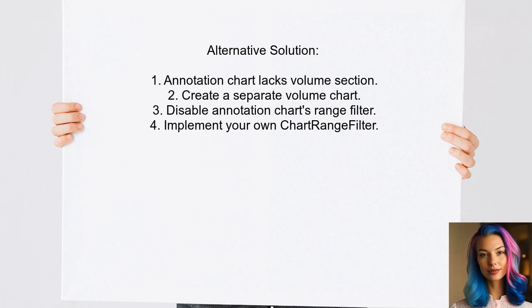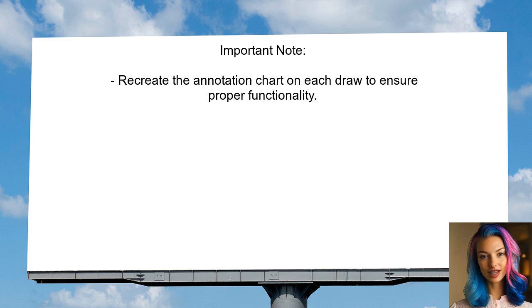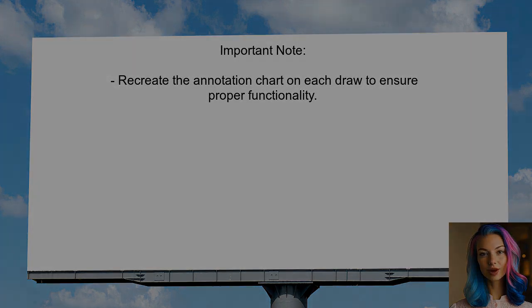To do this, you would need to disable the annotation chart's range filter and implement your own chart range filter. They also mention that the annotation chart may not redraw correctly after applying and removing filters. To fix this, you should recreate the annotation chart each time it is drawn.